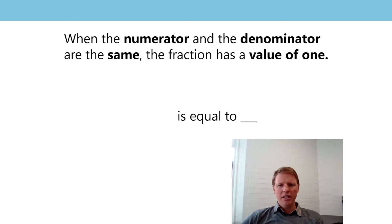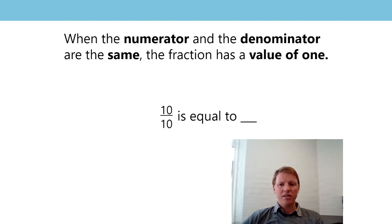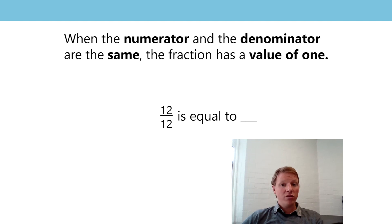So let's build on that a little bit more - still the same generalisation. Let's think about completing some descriptions of some fractions. 9 ninths is equal to 1 - we've said that already today. 10 tenths is equal to 1 - haven't seen that one, but we now know that. 5 fifths is equal to 1. 12 twelfths is equal to 1. Hopefully you're spotting this pattern.